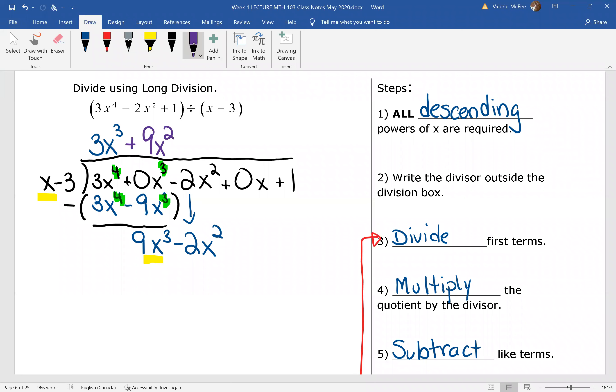We divided the first terms, put our quotient 9x squared on top. Now we can multiply. Again, we've matched up our powers and we're going to subtract.